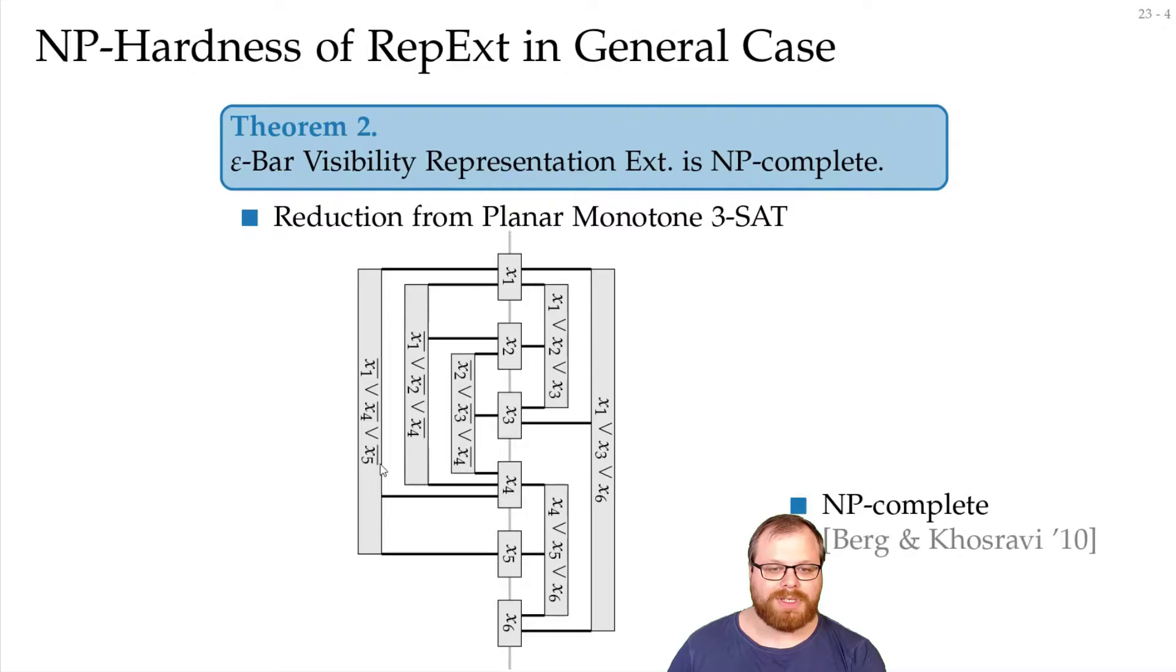We will first rotate the drawing a bit. So we want some gadget for every vertex. And then we want a gadget for every clause. That's the basic idea. We have something here. And to the right, we have something that's either true or false, and to the left, we have some bars that are the opposite. And then this clause gadget can only be completed if one of those at least is true.